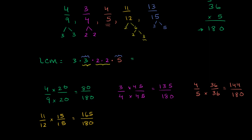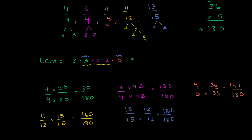Finally, we have 13/15. To get the denominator to be 180, we multiply by 12 — we already know 12 times 15 is 180. So multiply by 12 in the denominator and also in the numerator. 12 times 12 is 144, plus one more 12 gives 156. So 13/15 equals 156 over 180.